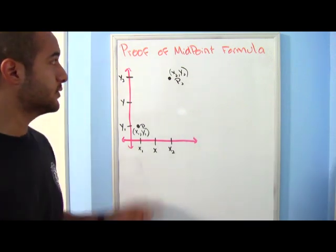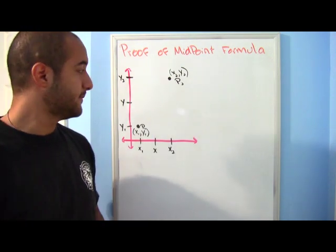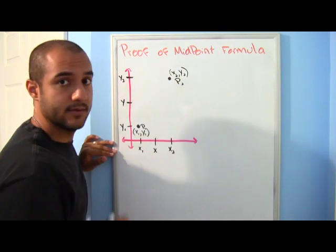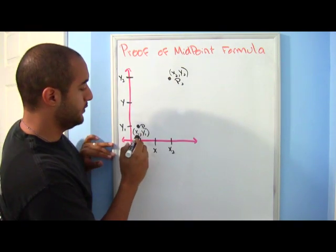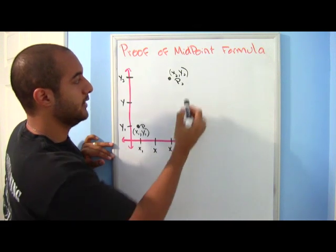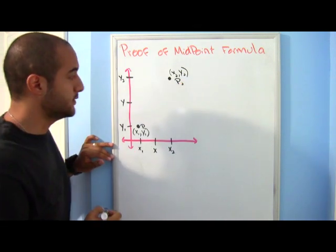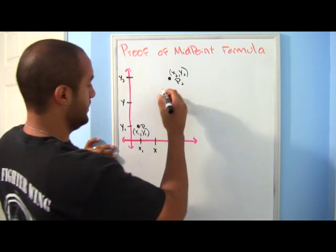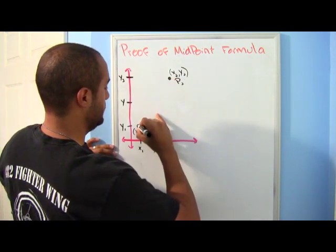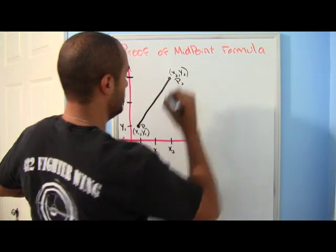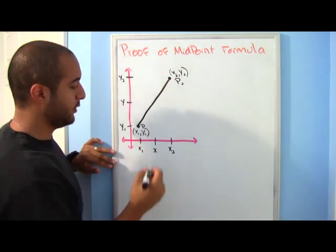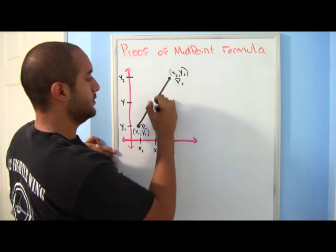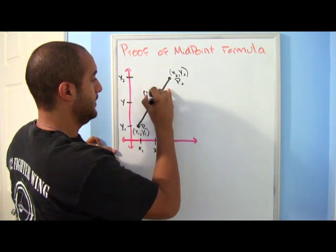Here's the proof of the midpoint formula. Here we're given two points, p1 and p2, with coordinates x1, y1 and coordinates x2, y2. We're going to choose a point x, y.